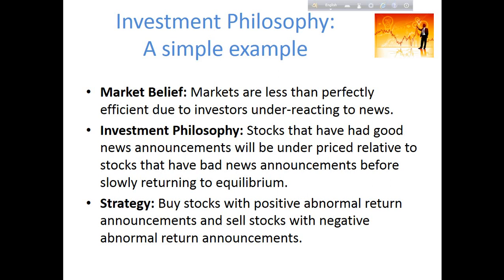Let's take a very simple example of an investment philosophy. Say you are an investor and you believe that markets are less than perfectly efficient due to investors under-reacting to news — that is, news comes out and investors take a while to adapt that news into market prices. Therefore your philosophy might be that stocks that have had good news announcements, such as positive earnings announcements, might be underpriced, because the positive news is not immediately filtered into the price. Conversely, stocks that recently had a bad earnings announcement might be overpriced because that negative information is not fully embedded in prices. Your investment strategy to exploit this would then be to buy stocks following positive earnings announcements and sell stocks following negative earnings announcements.